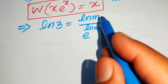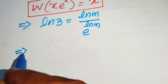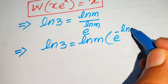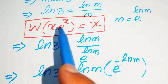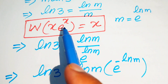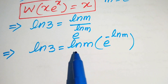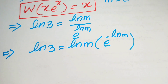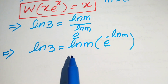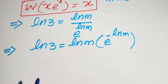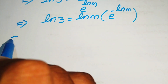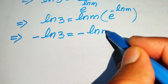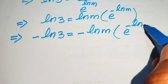We move e to the power of log m so that it will be written as log 3 equals log of m times e to the power of minus log m. The exponent is minus log m. To match the Lambert W form, we multiply both sides by minus 1, giving minus log 3 equals minus log m times e to the power of minus log m.